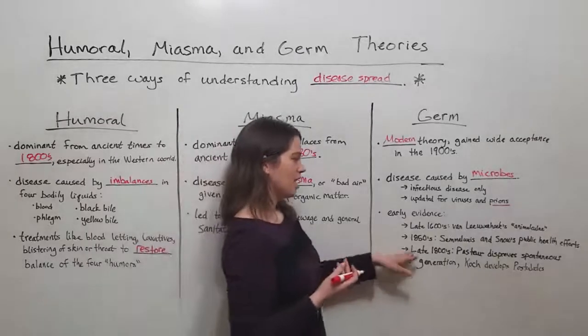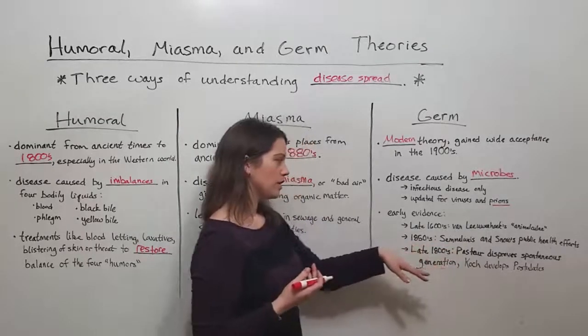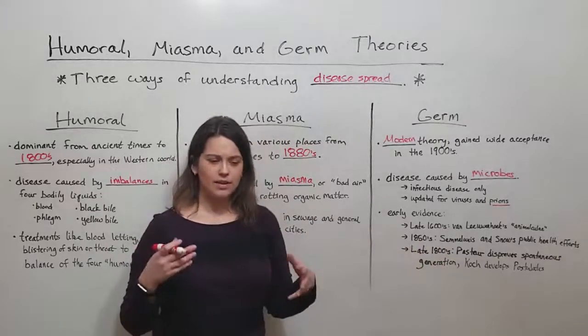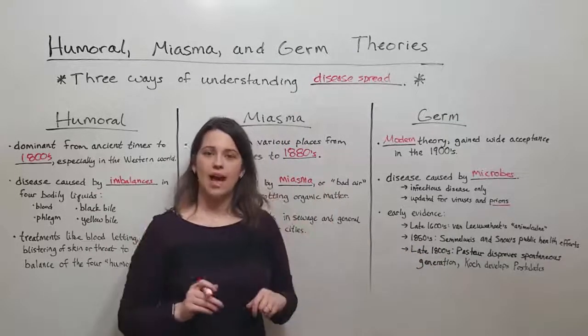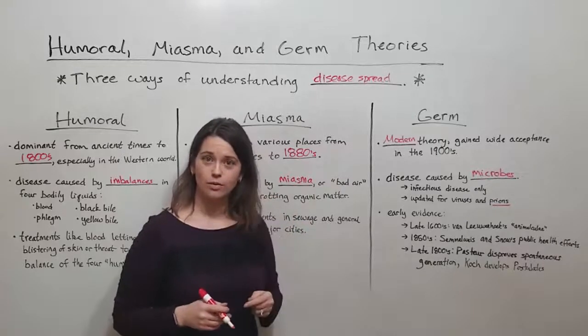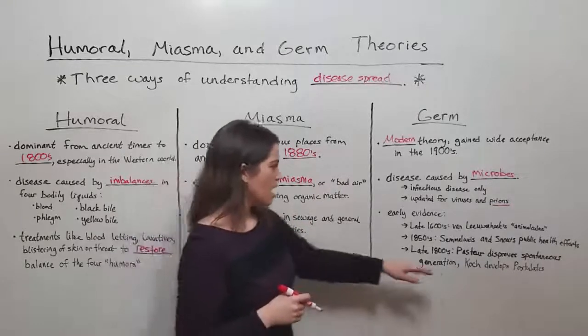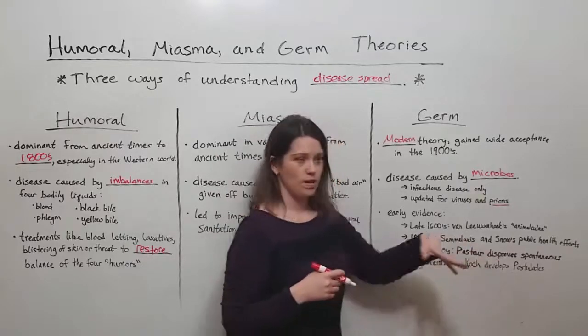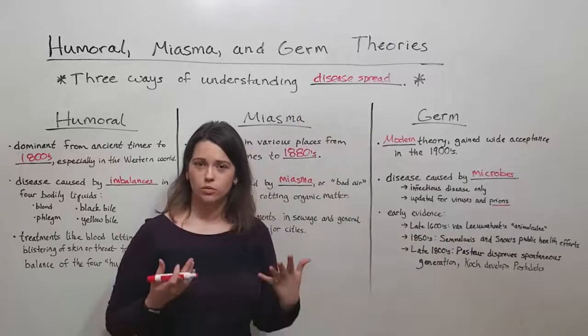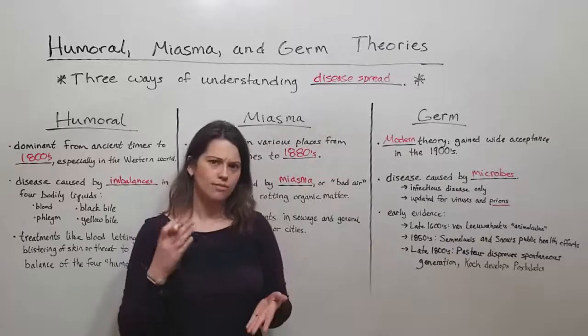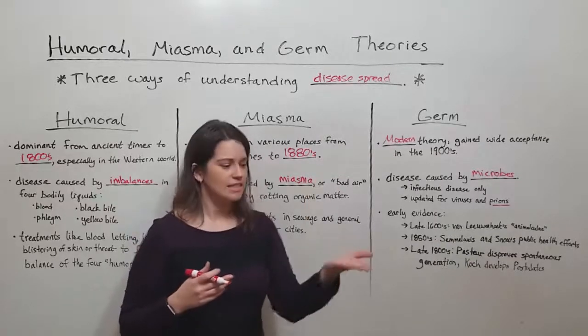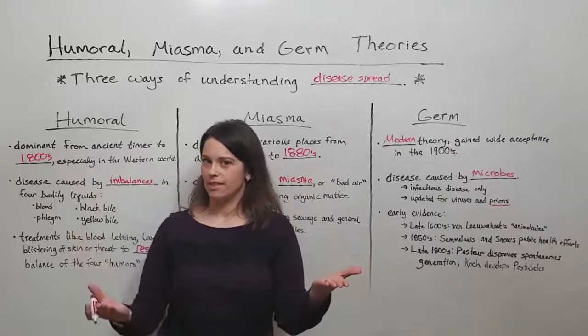In the late 1800s, Pasteur disproved spontaneous generation. This was the idea that living things could come from non-living matter. He said no, they can't. There's these microorganisms that we can't see. And then around the same time, Robert Koch was developing what are now known as Koch's postulates, which are the set of rules we have to go through and satisfy in order to say that yes, this disease is caused by this organism.